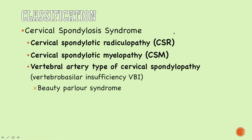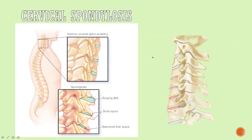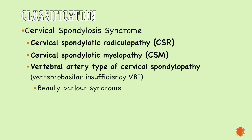Compressed spinal nerves cause radiculopathies; compressed spinal cord causes myelopathies. Cervical spondylosis is a syndrome encompassing: (1) cervical spondylotic radiculopathy (CSR), (2) cervical spondylotic myelopathy (CSM), and (3) vertebral artery type cervical spondylopathy, also called vertebrobasilar insufficiency — because the vertebral artery running through the vertebras can be compressed by osteophytic growth, impairing blood flow to the brain.